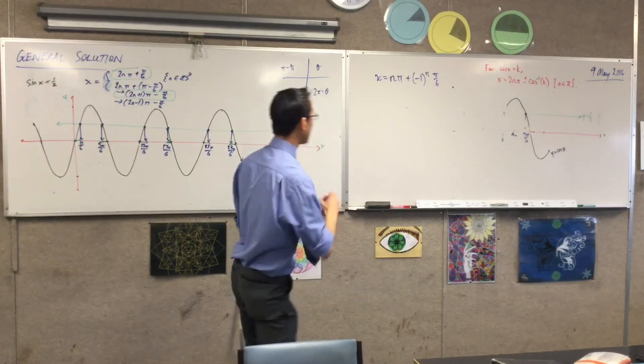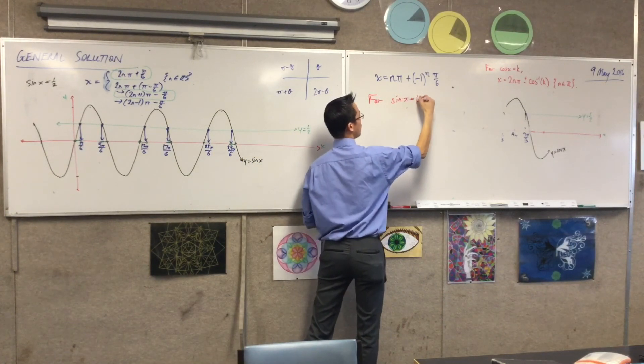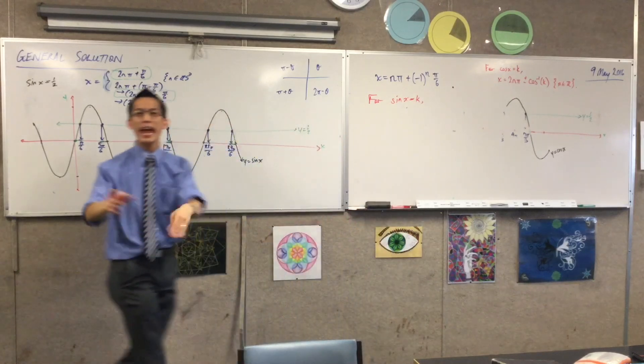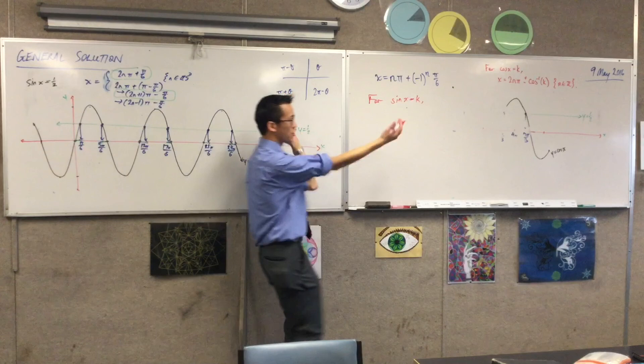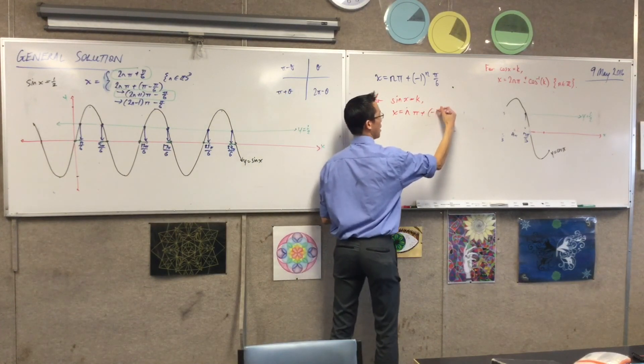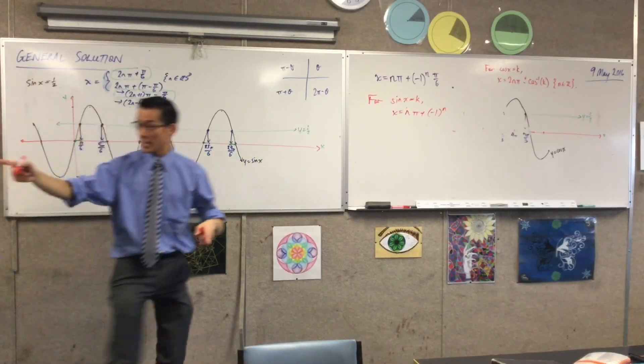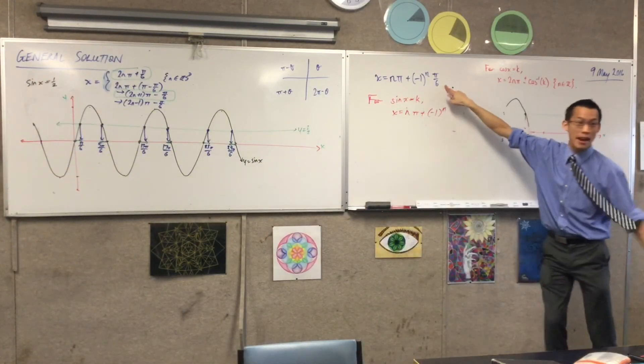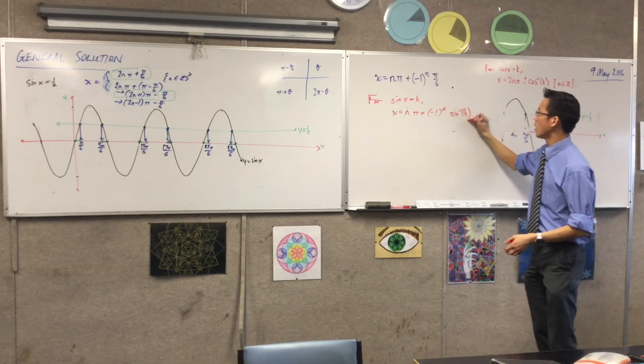So, lastly, to finish it out, I can say generally, if you are solving sine x equals any constant you like, then for any domain, x is going to equal n pi plus negative 1 to the n times what again? Sine inverse. Sine inverse, very good. Whatever angle, whatever base angle will do it for you. Sine inverse.